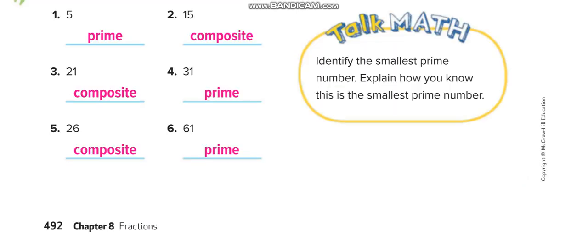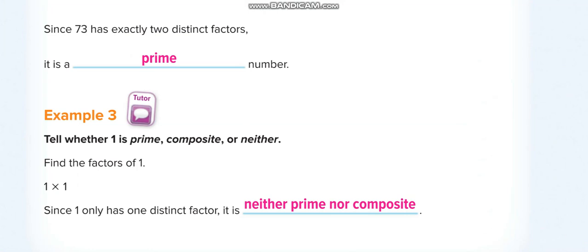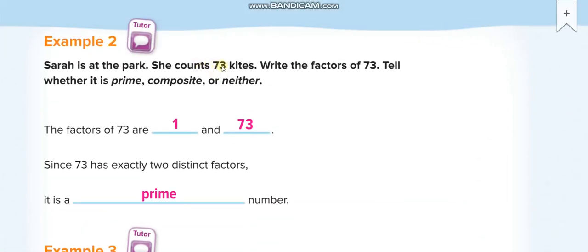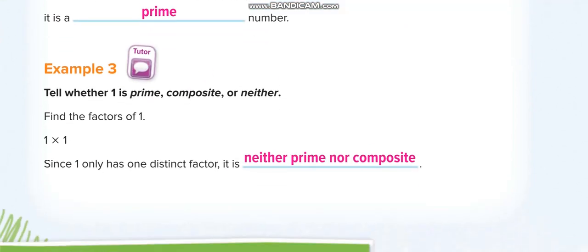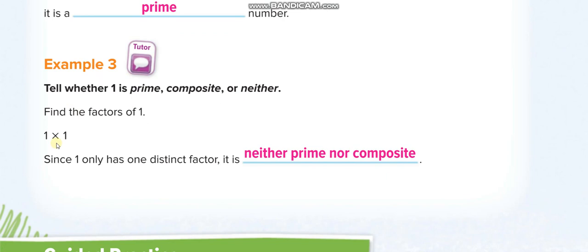Moving to the next page: 73 cards — is 73 prime or composite? It only has one factor pair: one and 73. So it is a prime number. And as we said, the number one is neither prime nor composite.